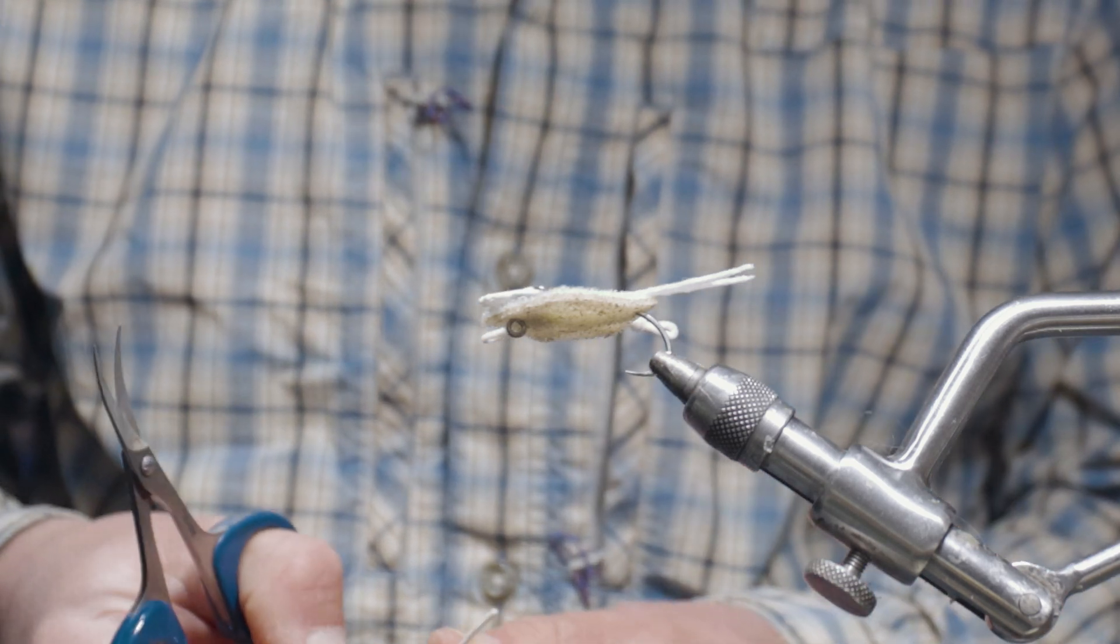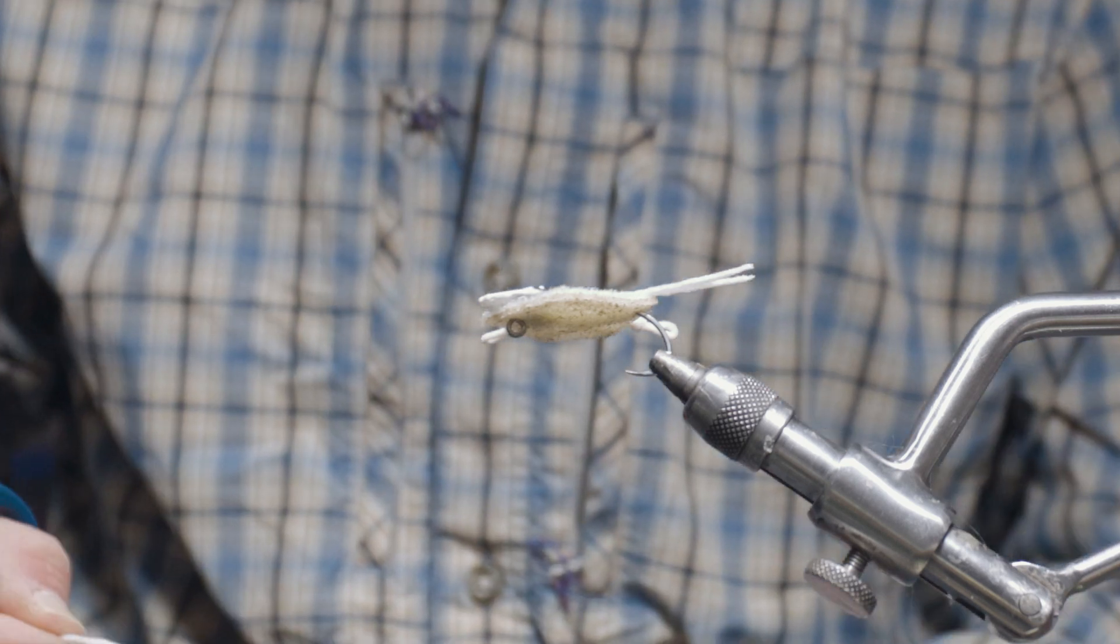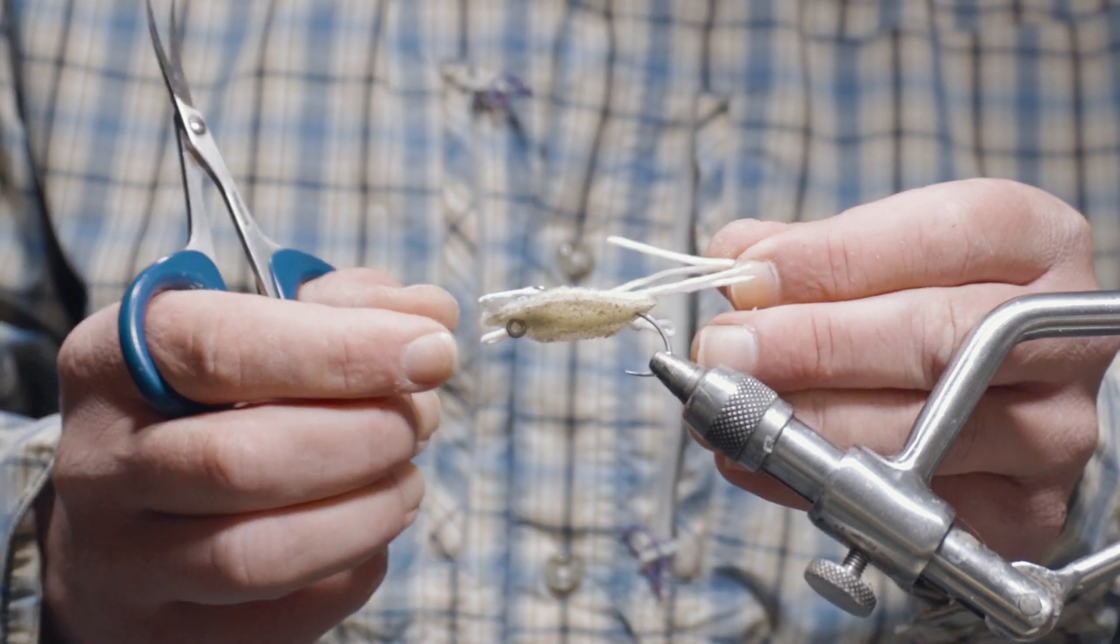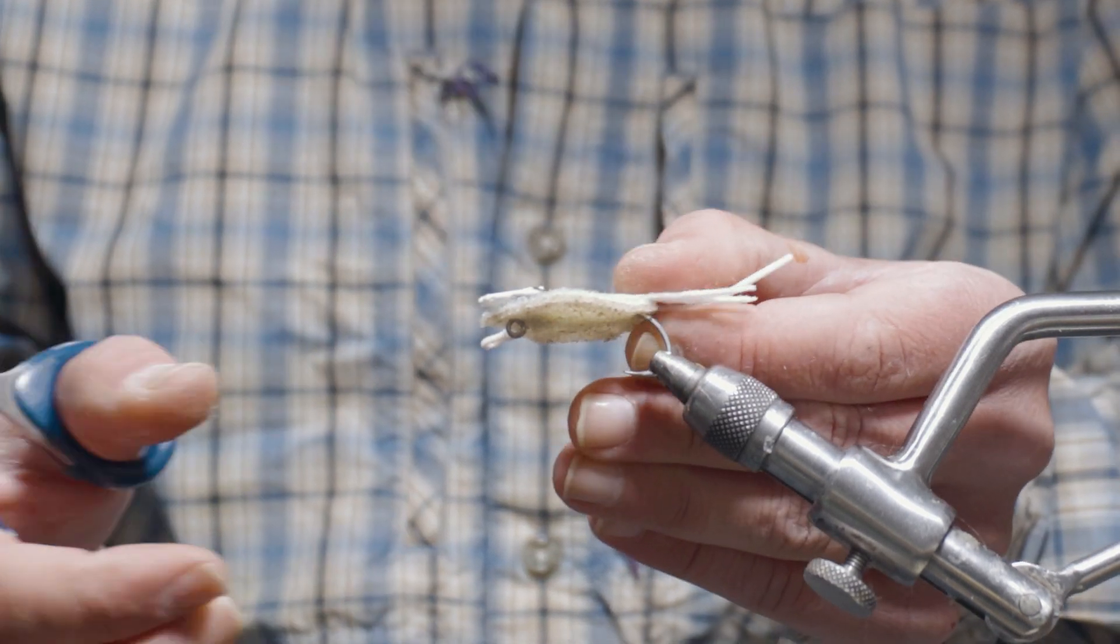And then I'm going to take four more additional pieces of ultra chenille and lay those in between the paddle legs and the claws on each side.